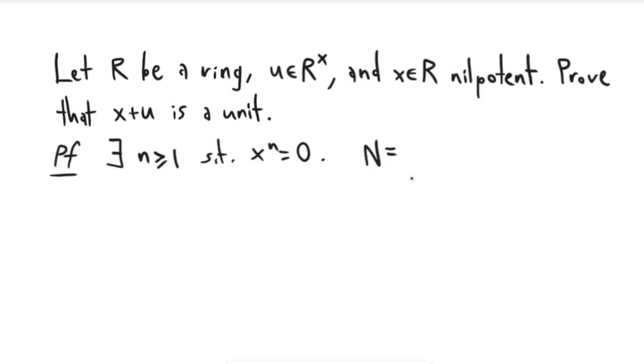So we can set n to be equal to n if n is even, and then n plus 1 if n is odd. And then it's still going to be true that x to the n is equal to 0. So we'll do this for convenience.